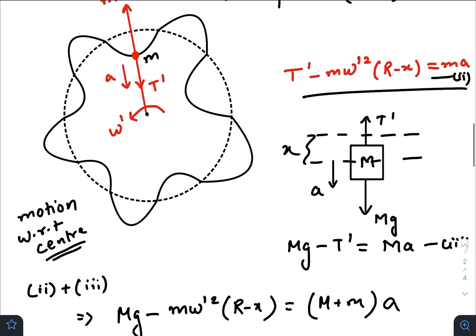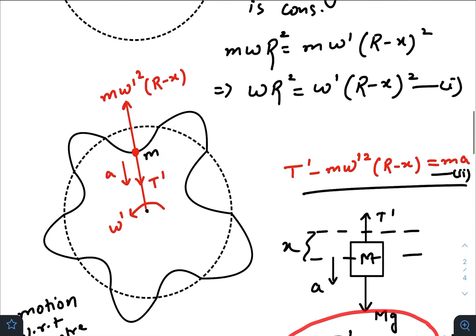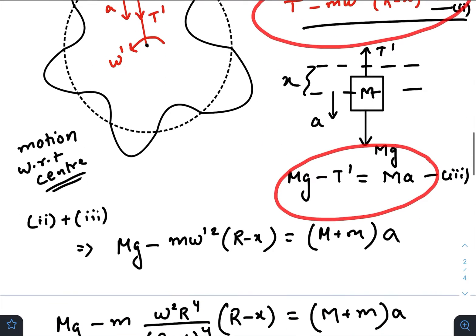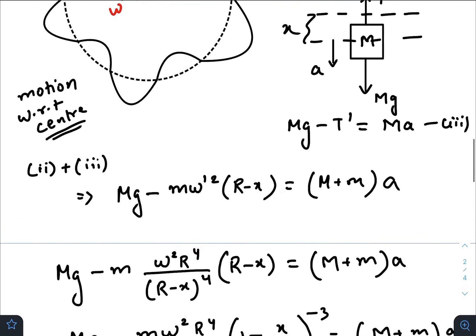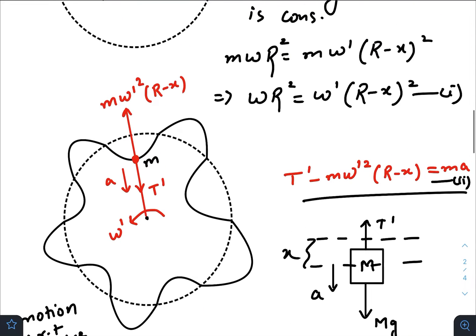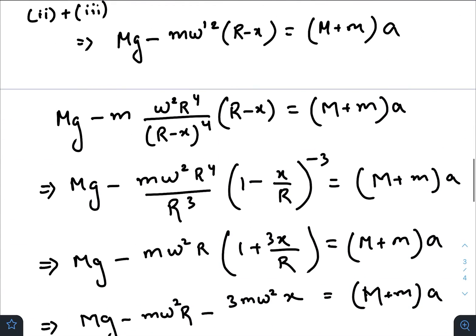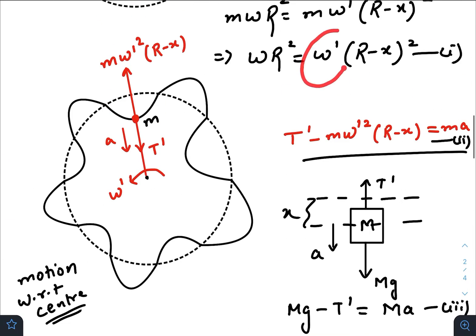So we have this equation and this one. We will add these two equations. Now we have omega prime squared here. We can replace omega prime from the first equation that we got by conserving angular momentum. So just put the value of omega prime equals omega R squared by R minus x whole squared.